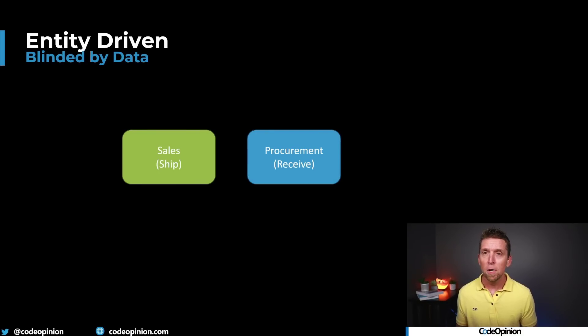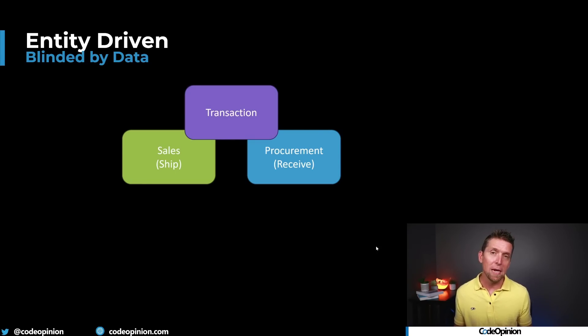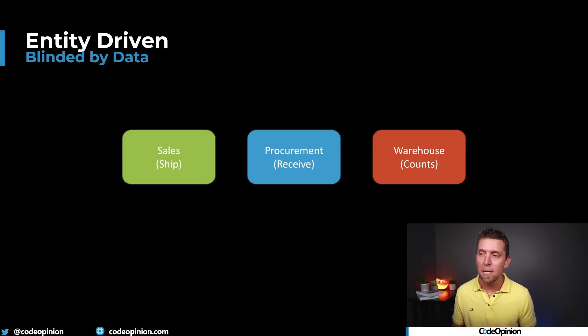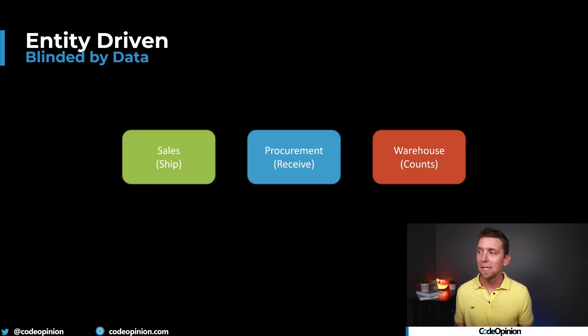Rather than trying to turn them into the same thing generically, you'd actually want to be very explicit about a customer and a vendor. The same applies with the transaction: we had the ability to create a sales transaction or a procurement transaction, and those things were ultimately deciding our quantity on hand. In the real world, there are also things like stock counts in our warehouse — cycle counts or full counts — that are also going to affect quantity on hand. Rather than trying to make things generic and fit everything under the same umbrella, you really want to be more explicit. Having a receipt for procurement, having a sales order or invoice, having some type of stock count — these are the actual behaviors. It needs to be distinct and explicit about those behaviors and the data behind them.